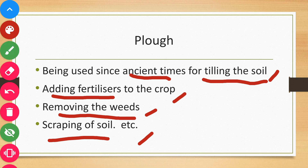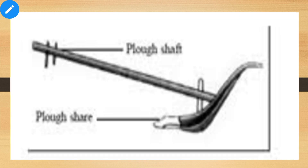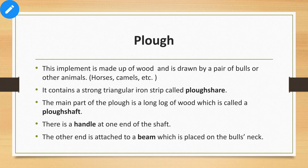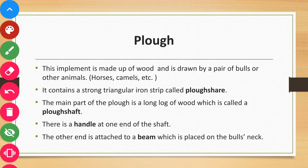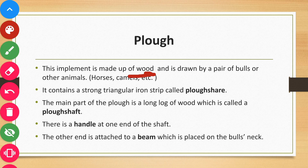Now let's look at the different parts of the Plow and how it was used in ancient times. This implement is made up of wood in ancient times, but nowadays we make this tool using iron. It is drawn by a pair of bulls or other animals, such as horses and camels.